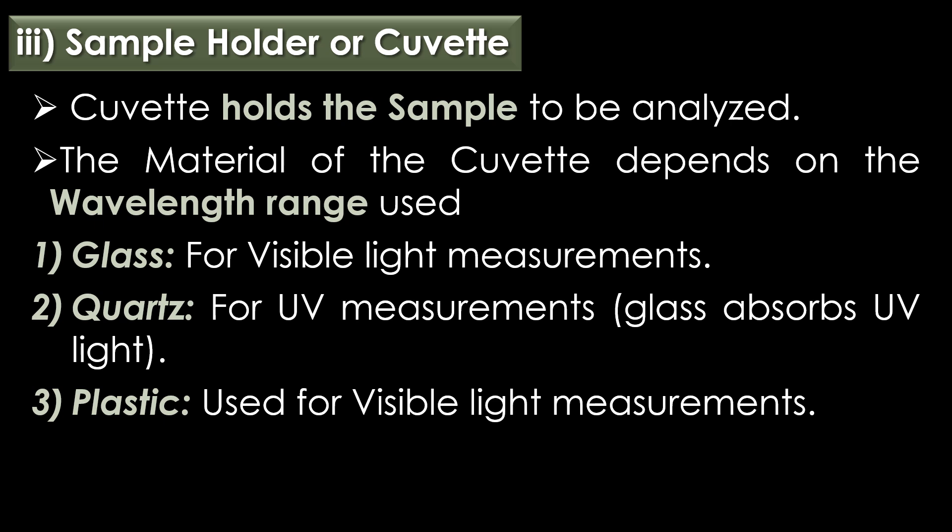Sample holder or cuvette: the cuvette holds the sample to be analyzed. The path length, typically one centimeter, is the distance the light travels through the sample and is a critical parameter in Beer-Lambert's Law. The material of the cuvette depends on the wavelength range used. Three types are used: glass, quartz, and plastic. The glass cuvette is used for visible light measurements, the quartz cuvette is used for UV measurements as glass absorbs UV light, and plastic is sometimes used for visible light measurements.